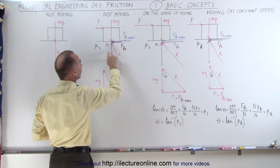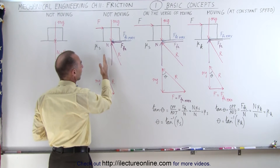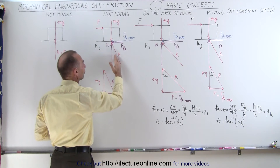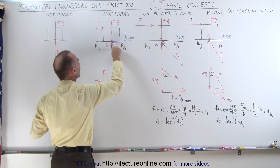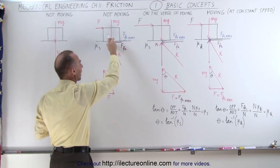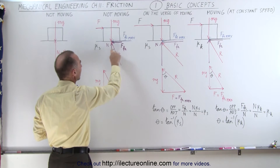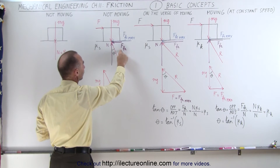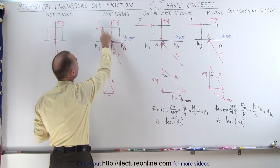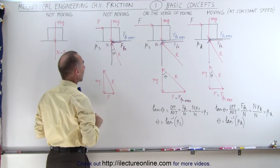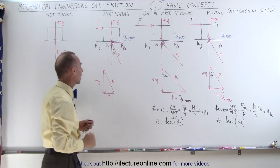We still have the normal force, which is equal to the weight of the block. Now notice that the reaction force is turned at an angle — there's a small angle between the vertical and the reaction force. The two components of the reaction force are the friction force, which equals the applied horizontal force, and the normal force, which equals the weight of the block.